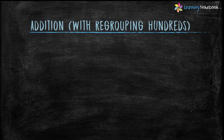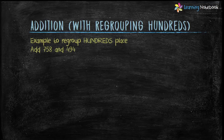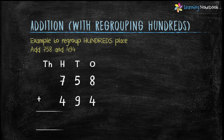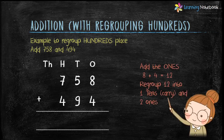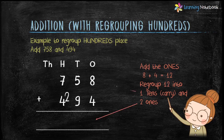Now let's learn addition with regrouping at the hundreds place. The example is to add 758 and 494. Write the numbers in column form and start adding at the ones place: 8 plus 4 is 12. Since it's a 2-digit number, regroup 12 into 1 ten (carry) and 2 ones. Write 2 at the ones place and 1 goes to the tens place.